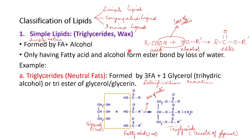The classification of lipids includes simple lipids, conjugated lipids, and derived lipids. Simple lipids are simply esters formed by fatty acid plus alcohol. The ester bond is formed by the loss of water — the OH from the acid and H from the alcohol combine to release water, forming the R-CO-OR' ester bond.